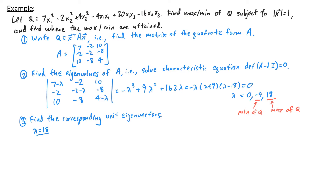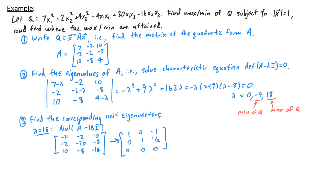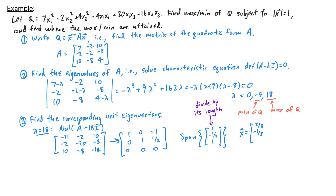Let's start with the eigenvalue λ = 18. We find the eigenspace, which is the null space of A minus 18I. That matrix is (−11, −2, 10; −2, −20, −8; 10, −8, −14). Row reducing gives (1, 0, −1; 0, 1, 1/2; 0, 0, 0). So the eigenspace for λ = 18 is the span of the vector (1, −1/2, 1). I want a unit eigenvector, so I divide by its length. The corresponding unit eigenvector is x equals (2/3, −1/3, 2/3). Another input that gives the maximum value 18 is the negative of this: (−2/3, 1/3, −2/3).